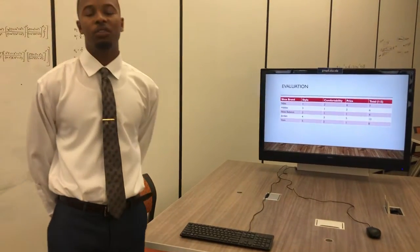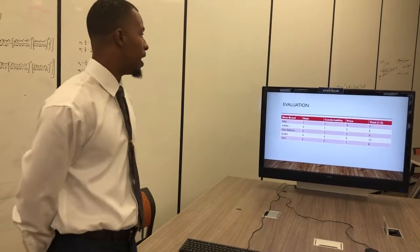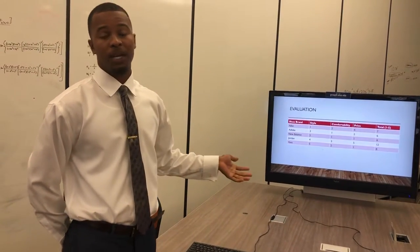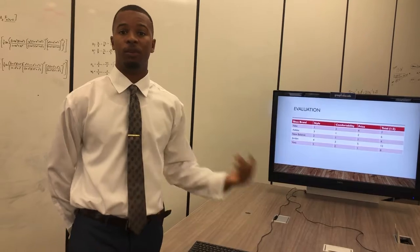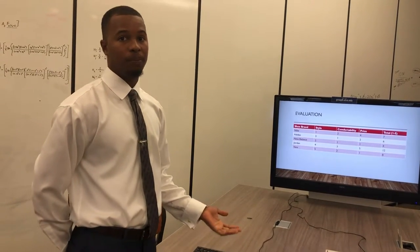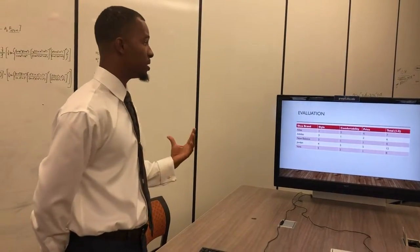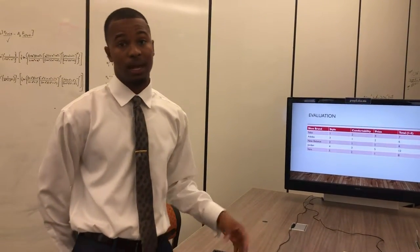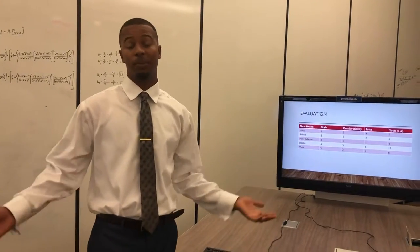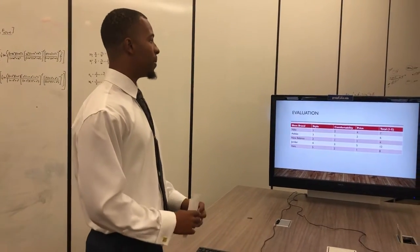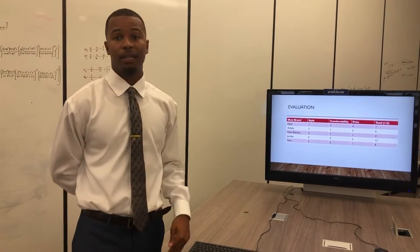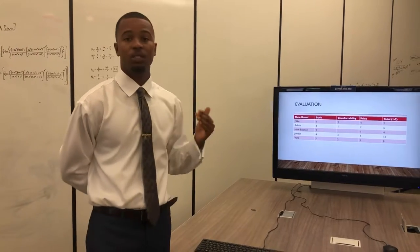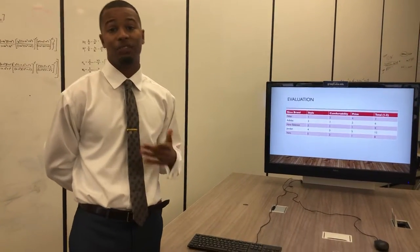So after doing my evaluation, I'm looking at style, comfortability, and price. I added up my totals from one to five, with one being the best, or the most comfortable, or the most stylish, or the best price, and five being the least comfortable, the least stylish, and the most expensive. And we came out with these totals, which are seven for Nike, six for Adidas, four for New Balance, 12 for Jordan, and eight for Vans.